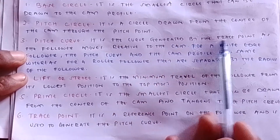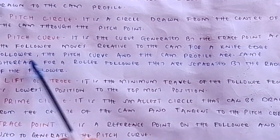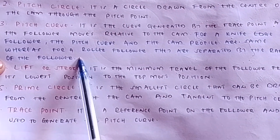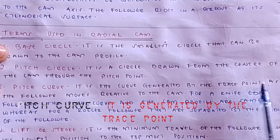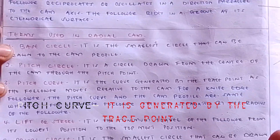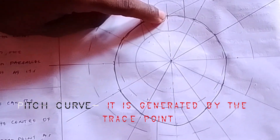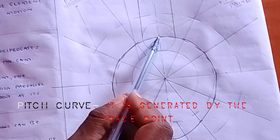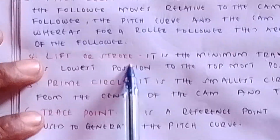The next term is the pitch curve. It is the curve generated by the trace point as the follower moves relative to the cam. For a knife-edge follower, the pitch curve and the cam profile are the same, whereas for a roller follower they are separated by the radius of the follower. The pitch curve is generated from the trace point — this point here — and from this point we establish the pitch curve.